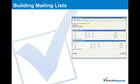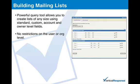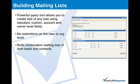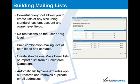Vertical Response provides a powerful query tool enabling you to build mailing lists of any size using standard and custom fields. This includes both owner and account level fields as well. There are no restrictions on the user or org level, so you can create and send emails immediately rather than breaking your list into smaller segments. In addition, you can create combination mailing lists of both leads and contacts, instead of making two separate lists from each. You can create stand-alone mass email lists using our query tools, or create lists using a Salesforce campaign. We also handle your mailing list hygiene by automatically excluding the records of those people who have previously unsubscribed, and by running a deduplication scan to ensure no email address appears in a list more than once.